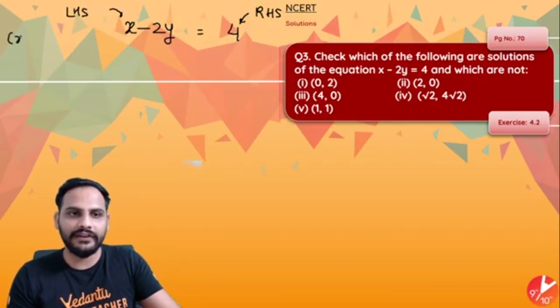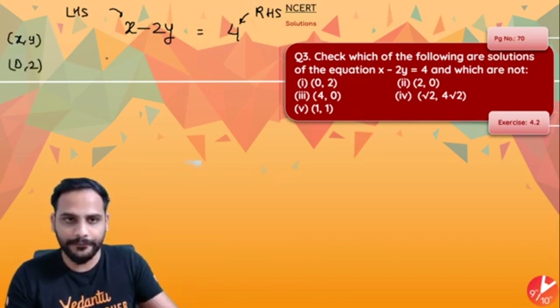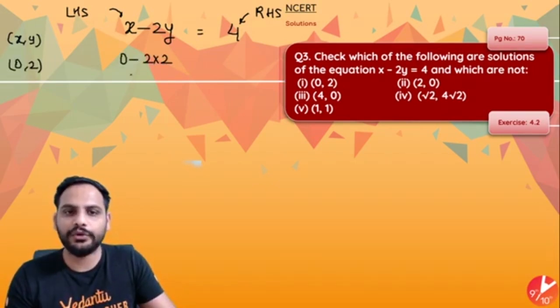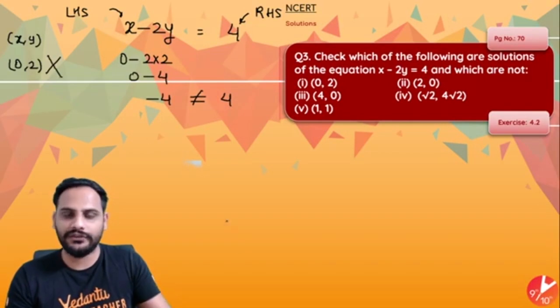All the values of x and y will be written in this form x, y. First value is 0, 2. So what you will be getting? 0 minus 2 into 2, so 0 minus 2 into 2 will become 0 minus 4 which is equal to minus 4. Now you can clearly see 0 minus 4 and 4, they are not equal. So this is not a solution.